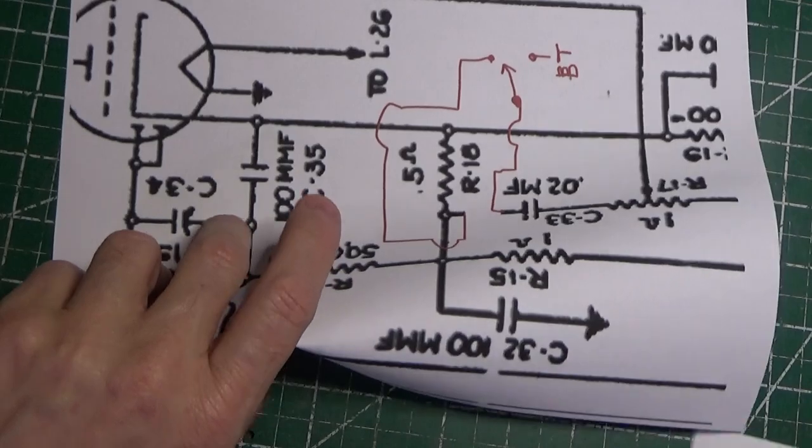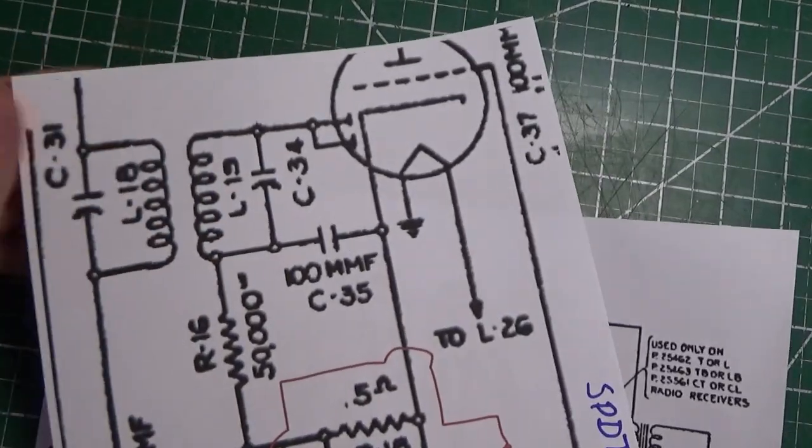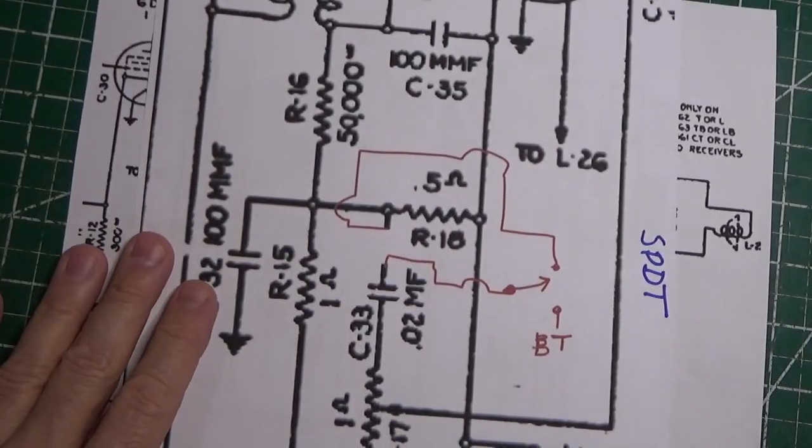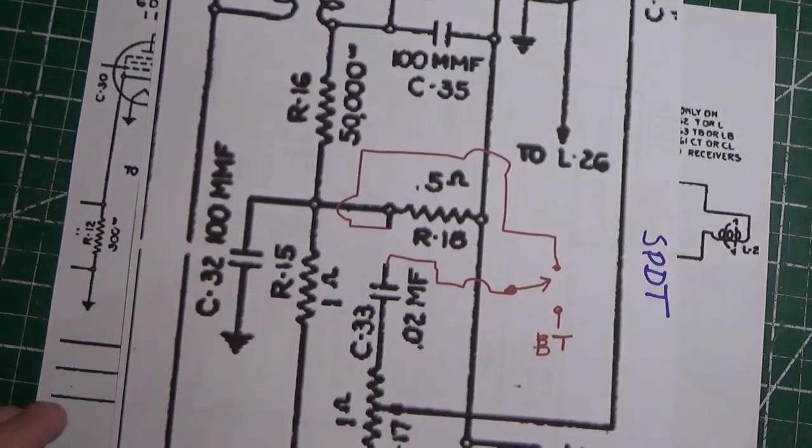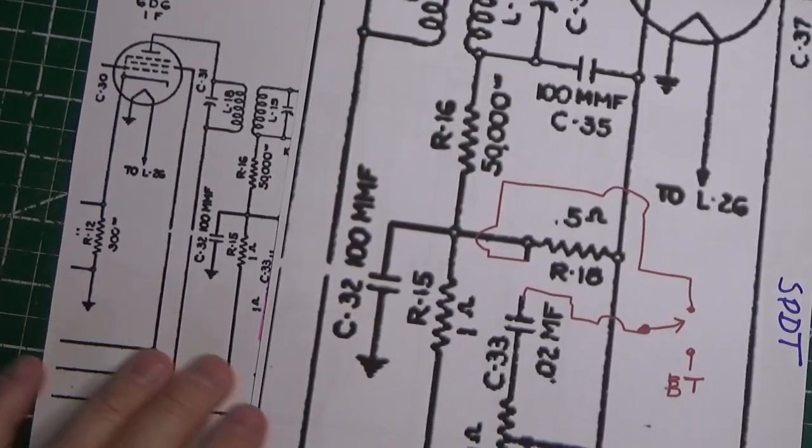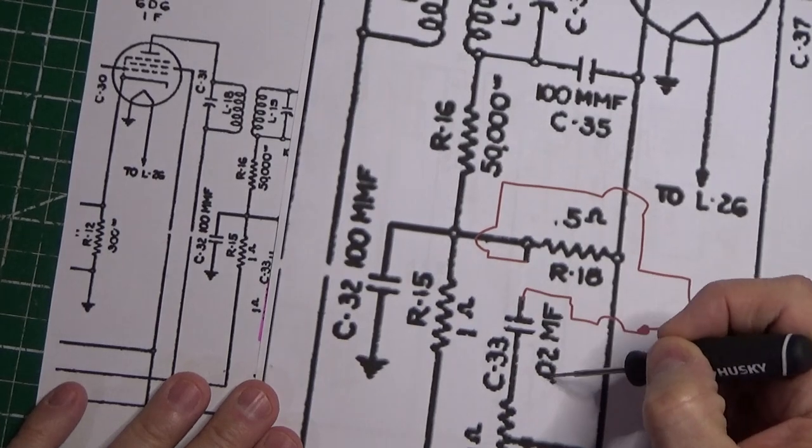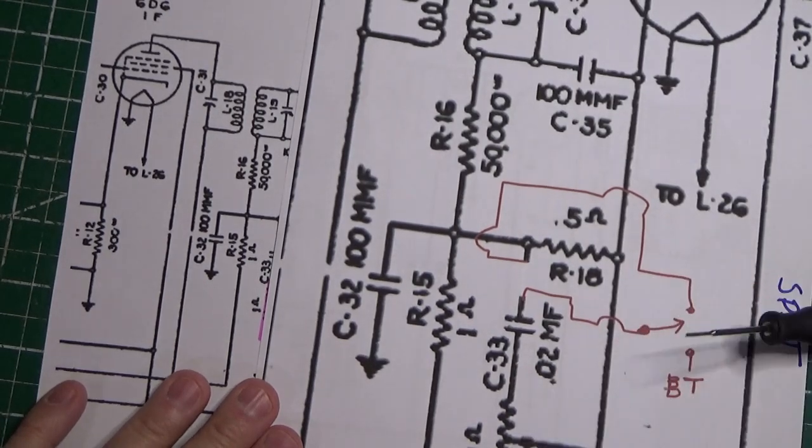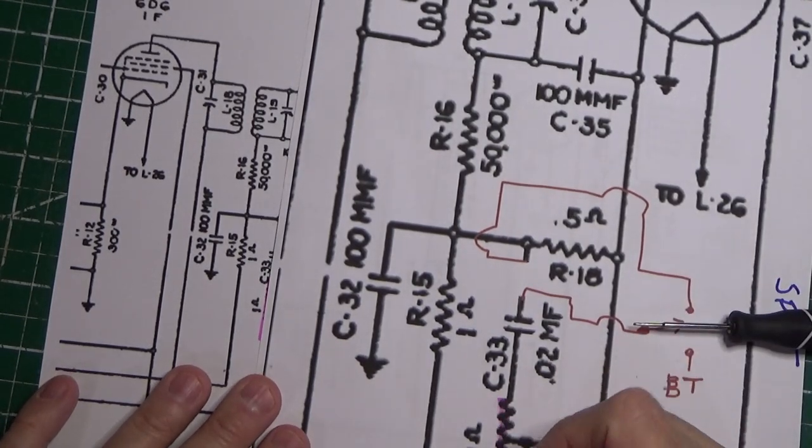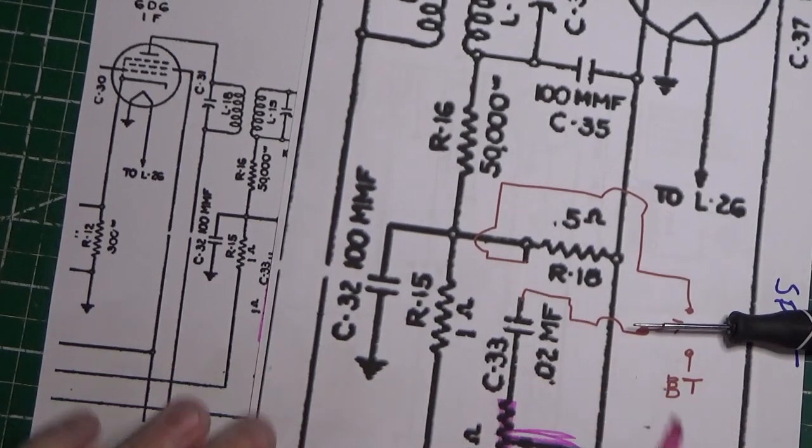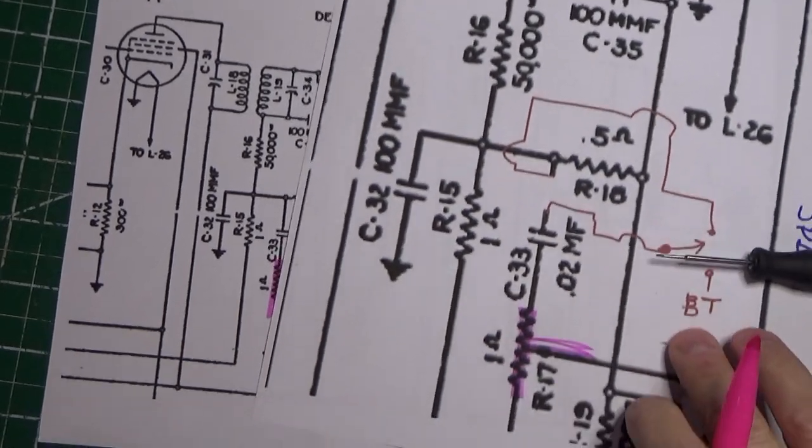So back to our schematic, here's our volume control. So what do we do? I'll show you. Basically what we're doing is we are severing this line right here. This is a point in this radio. Here's the volume control just for reference, let me draw it right here.